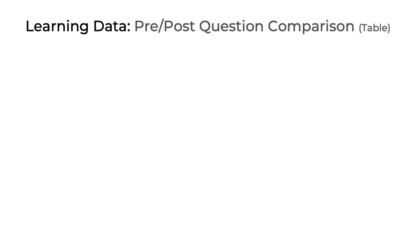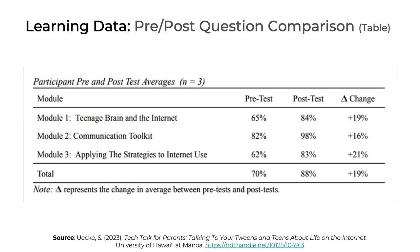So what about learning data? Most of you are going to have pre- and post-test scores, and you'll want to compare those. Here's an example of how to do that in a table. The results are broken down by module — module one, two, and three — and for each module we have a pre-test score and a post-test score. For module one, the pre-test score was 65 percent and the post-test score was 84 percent. The rightmost column also reports the difference, or delta — that triangle symbol — making it easy to see there was a 19 percent difference for module one. The bottom row shows an average for all three modules combined. This table is super easy to interpret and uses only horizontal lines to adhere to APA style.